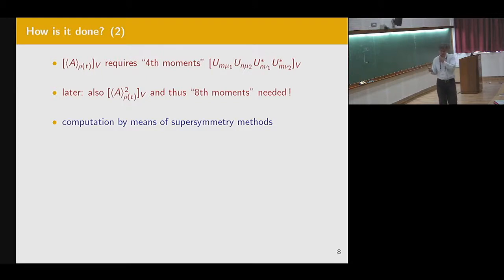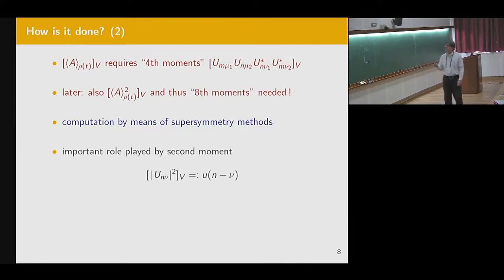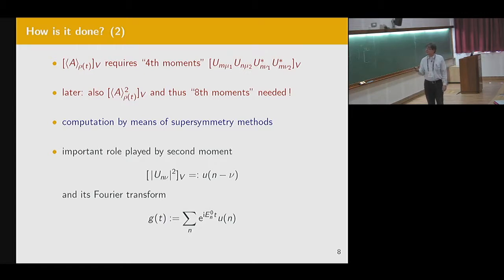Later I will also want to calculate the variance. This will involve eight of them in the same way. And the computation is done. The evaluation of these averages is done by means of supersymmetry methods. This is, of course, the main work, this one line. It is more than one-man-year work of my very good student and myself. And it turns out an important key role is played by the second moment, which I call little u. It only depends on the difference of the indices. And its Fourier transform, which I call g. It's the Fourier transform of this u. They play the central role in this game.